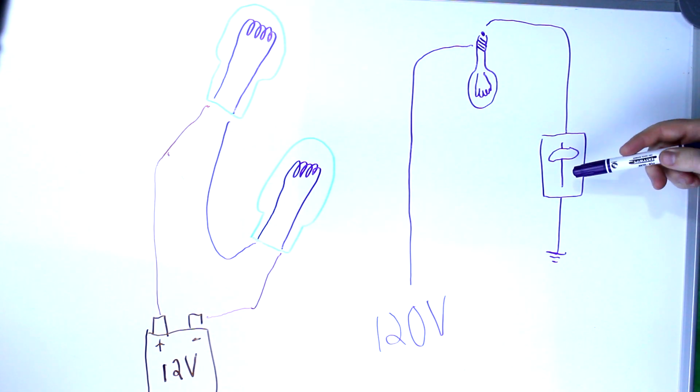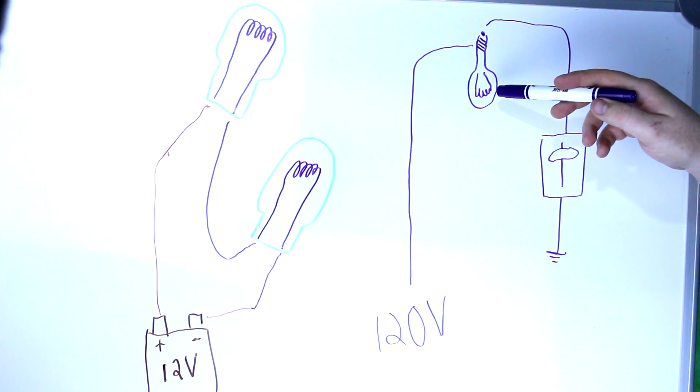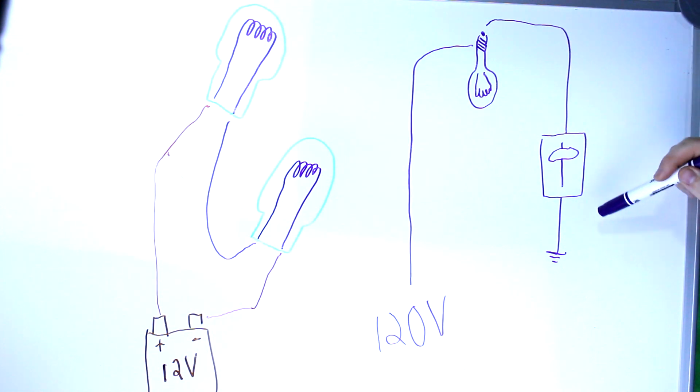So if you move this dimmer switch, and the light bulb gets brighter, that's because the resistance in this switch is going down, and most of the power is going to this light bulb. If you change that switch and it gets dimmer, that means the resistance in here is going up, and a lot more of that voltage push has to push through that switch, as opposed to push through this bulb element.